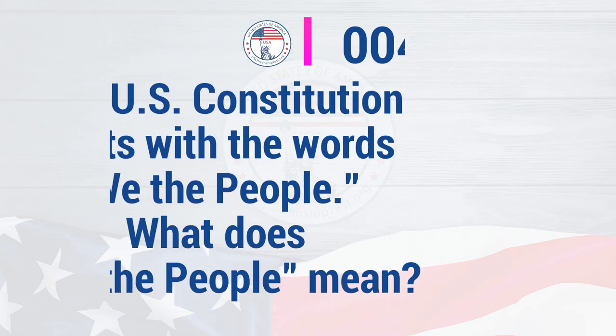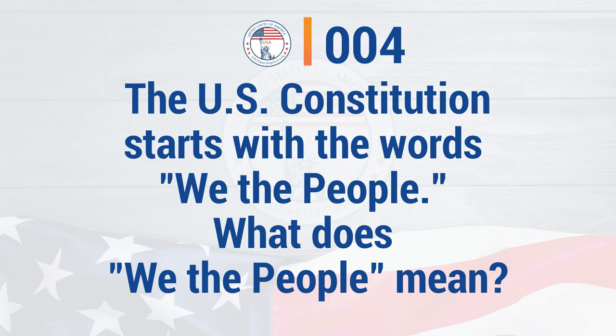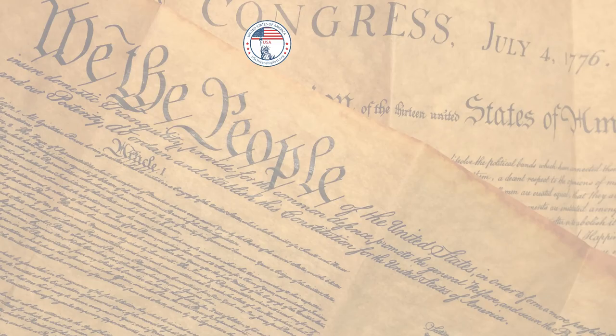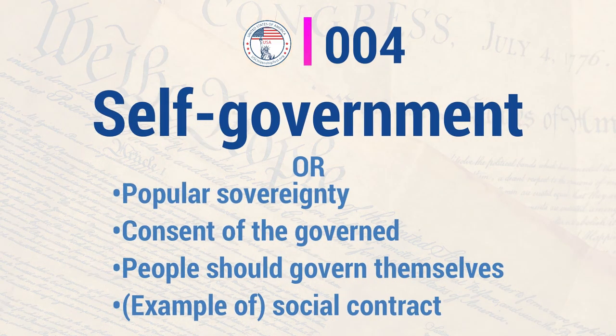The U.S. Constitution starts with the words 'We the people.' What does 'we the people' mean? Self-government.